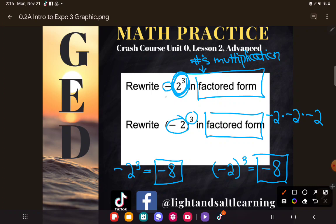of 2³. And so in order to do that, I would need 2³, which is 2 × 2 × 2, and I would take the opposite of that. I've rewritten it in factored form.